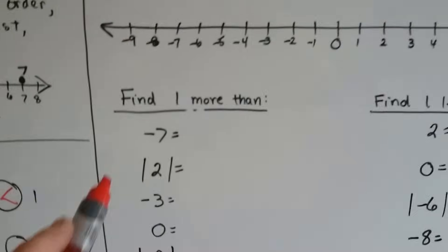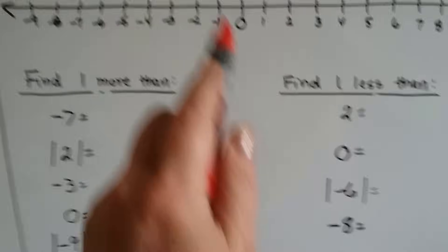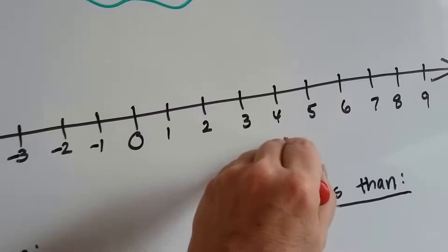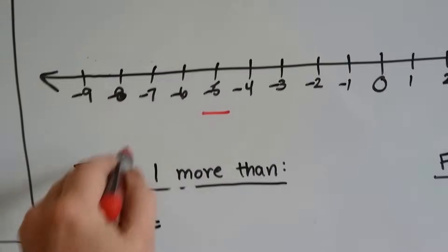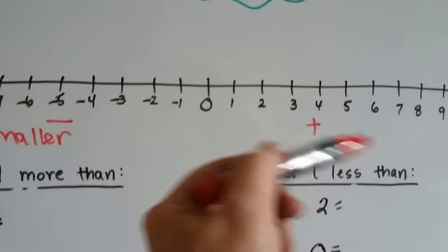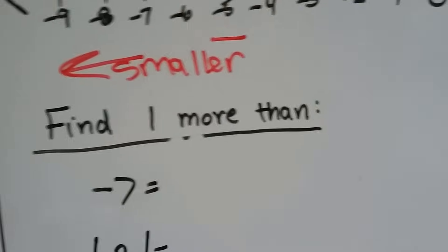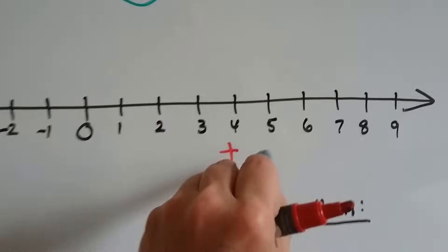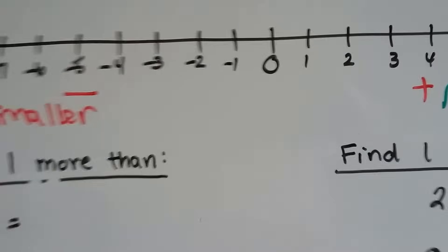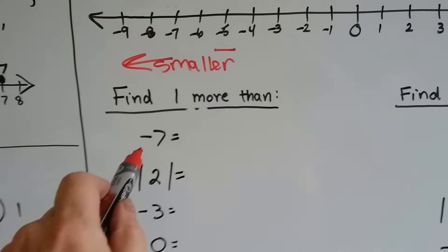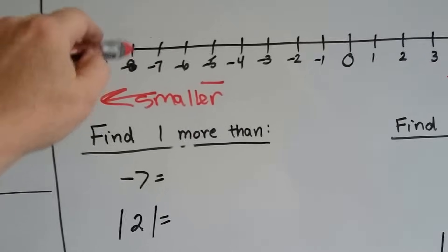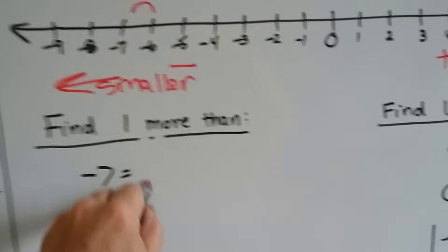If we wanted to find one more than these and one less than these, we could use this number line. This is the positive side and this is the negative side. As we go this way it gets smaller, and as we go this way it gets larger — bigger, greater. So one more than negative seven: here's negative seven. One more means we're going larger, so we go to negative six.